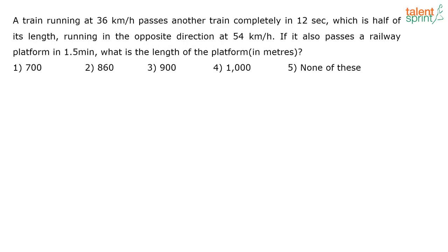Okay, this one, how do we solve? A train running at 36 km per hour passes another train completely in 12 seconds which is half of its length, running in opposite direction at 54 km per hour. It also passes a railway platform in 1.5 minutes.